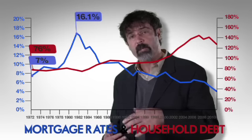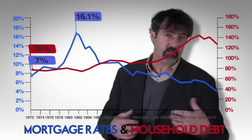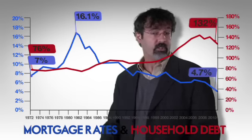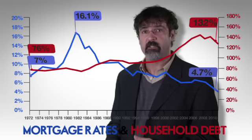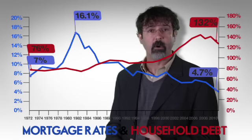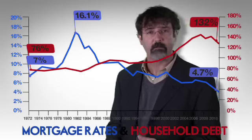As mortgage rates rose, people borrowed less, and as mortgage rates fell, people borrowed more. Today, mortgage interest rates are almost half of what they were in the 1970s, allowing households to borrow about twice what they could afford then.